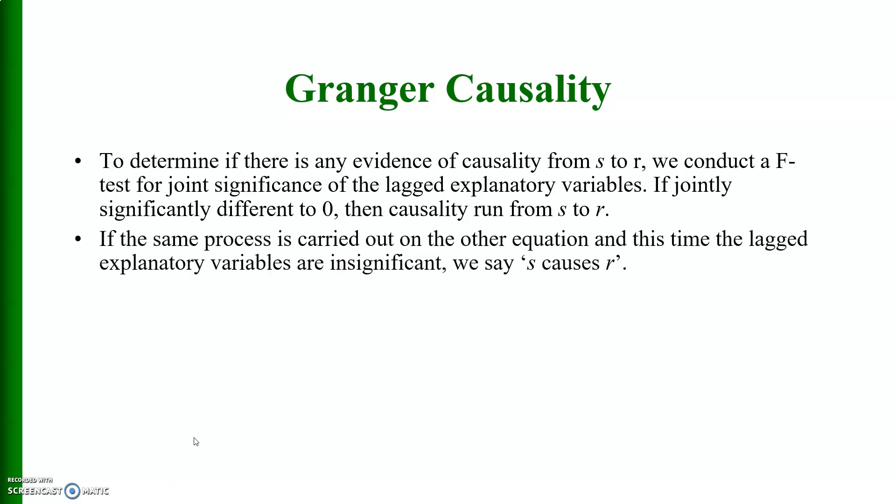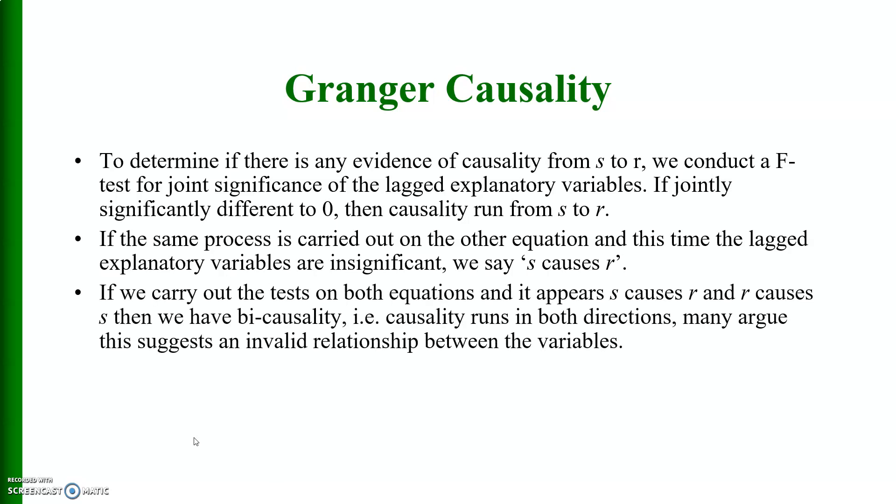If the same process is carried out on the other equation and this time the lag explanatory variables are insignificant, we say s causes r. If we carry out the test on both equations and it appears s causes r and r causes s, then we have bicausality. That is causality runs in both directions. Many argue this suggests an invalid relationship between the variables.